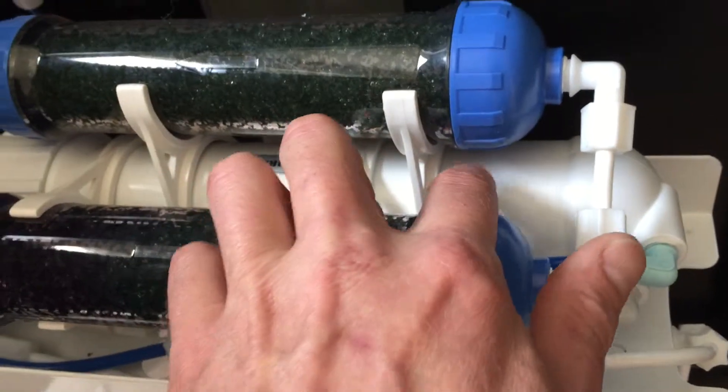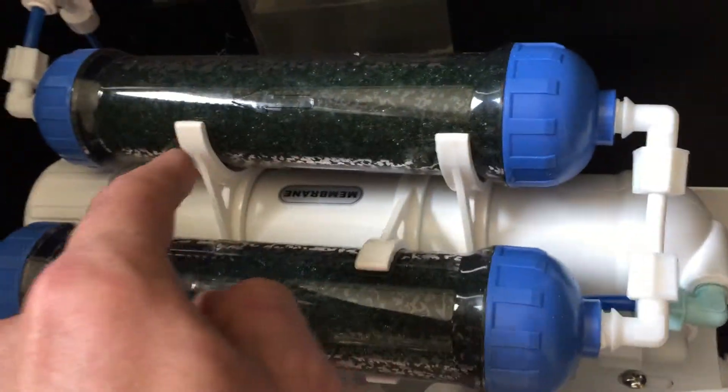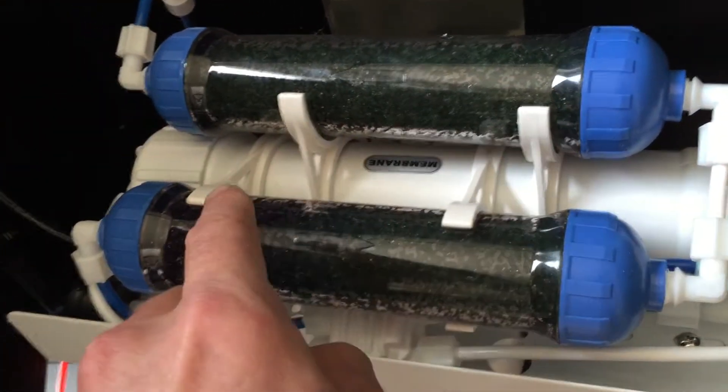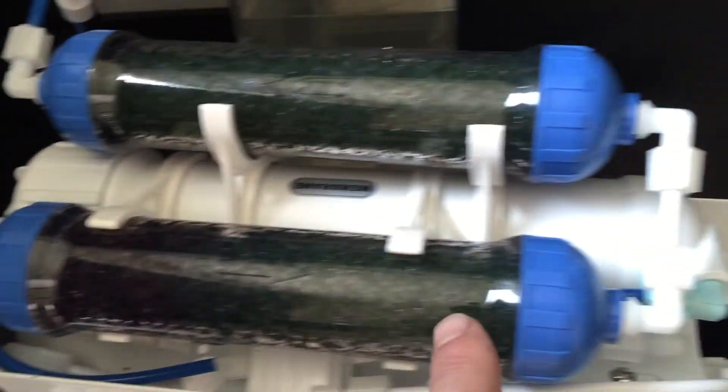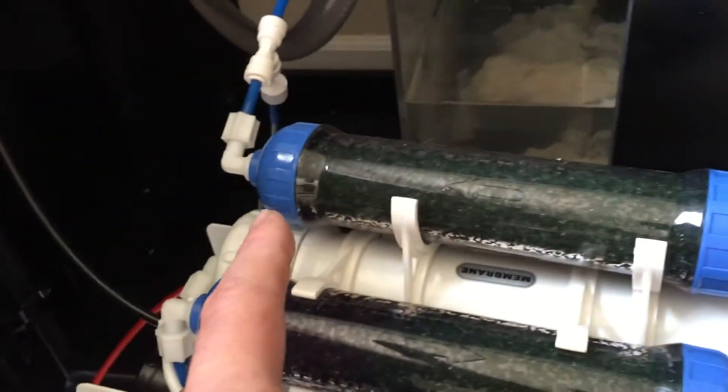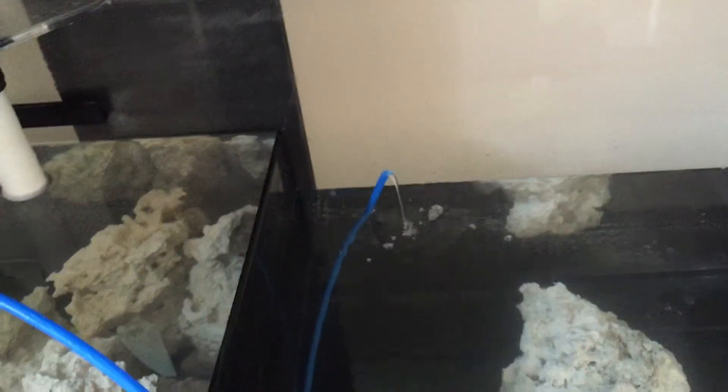I'm pretty sure it goes in through the membrane afterward, and then it rejects whatever water through this line. And then out it goes. Remaining water gets deionized through here and then out, and my sump, here it goes.